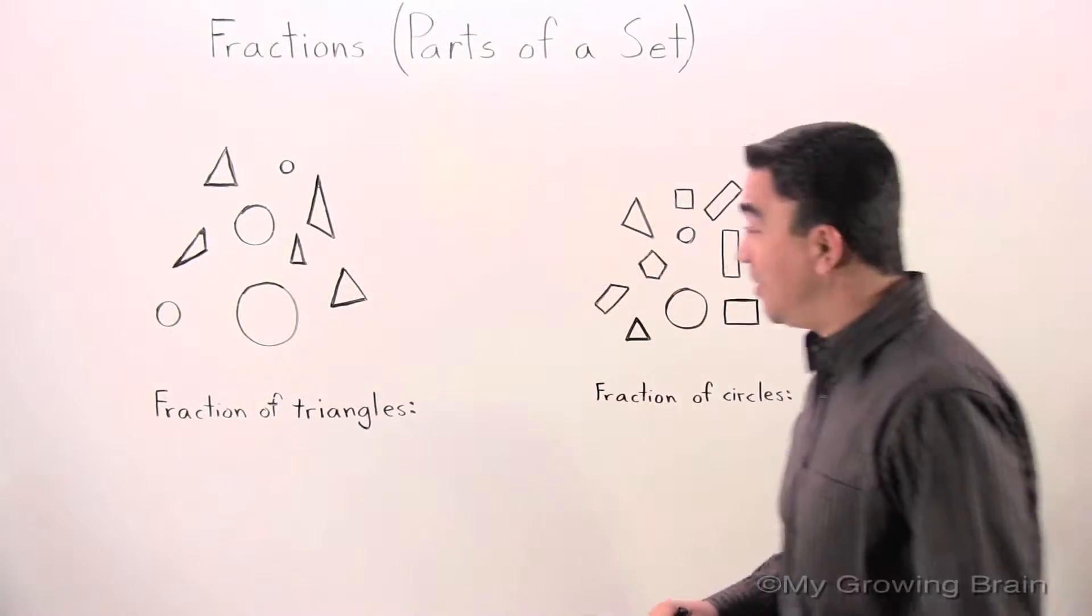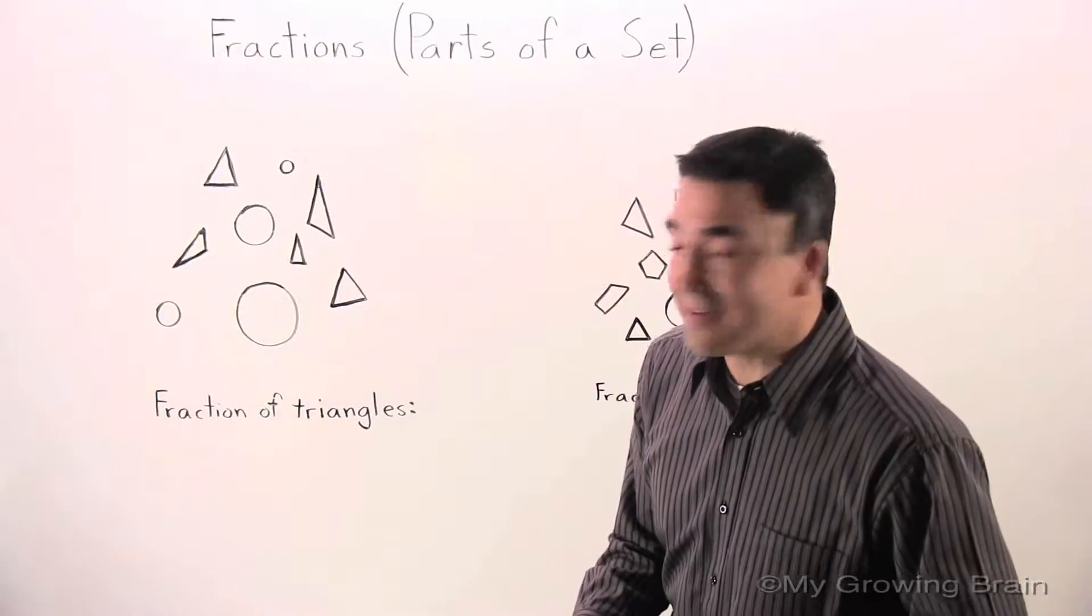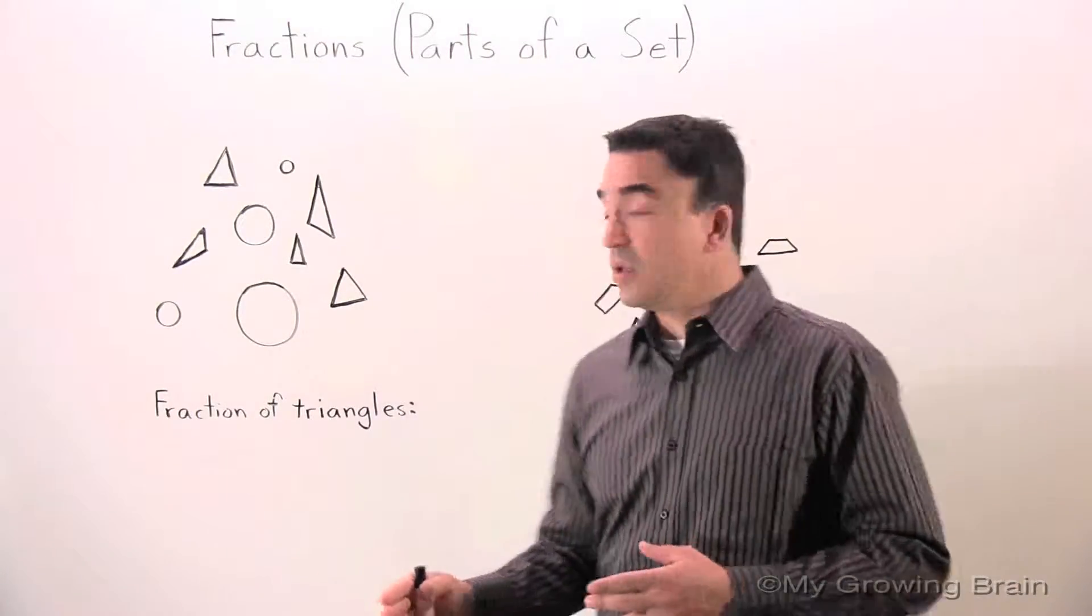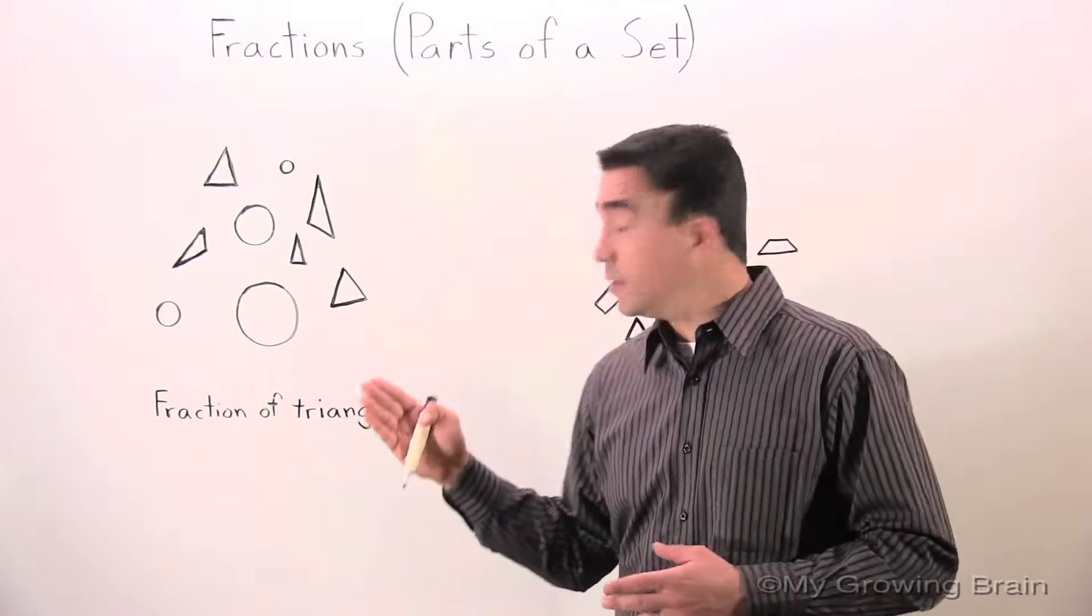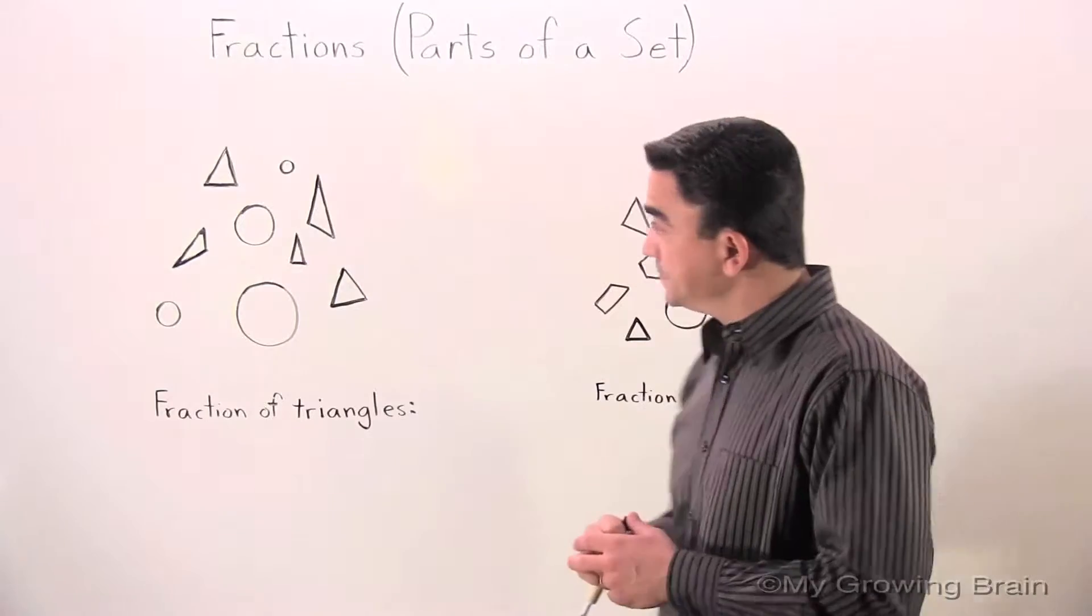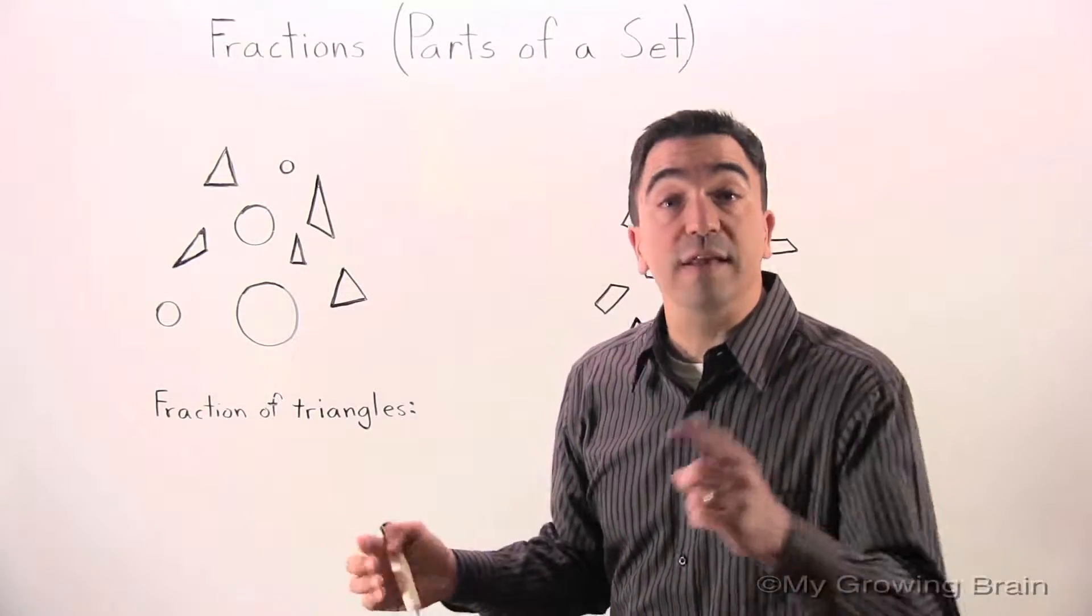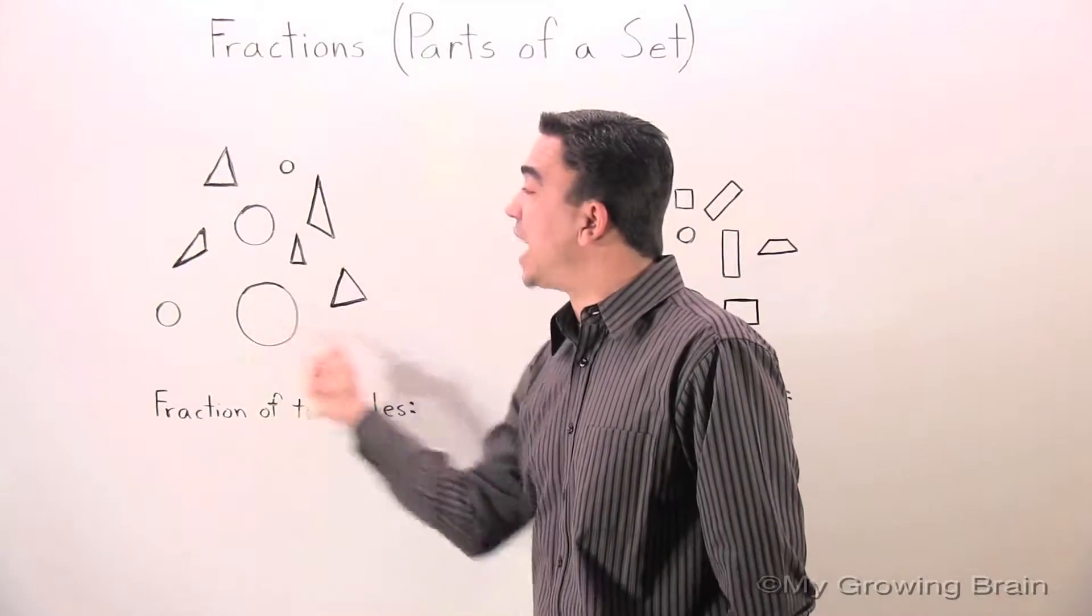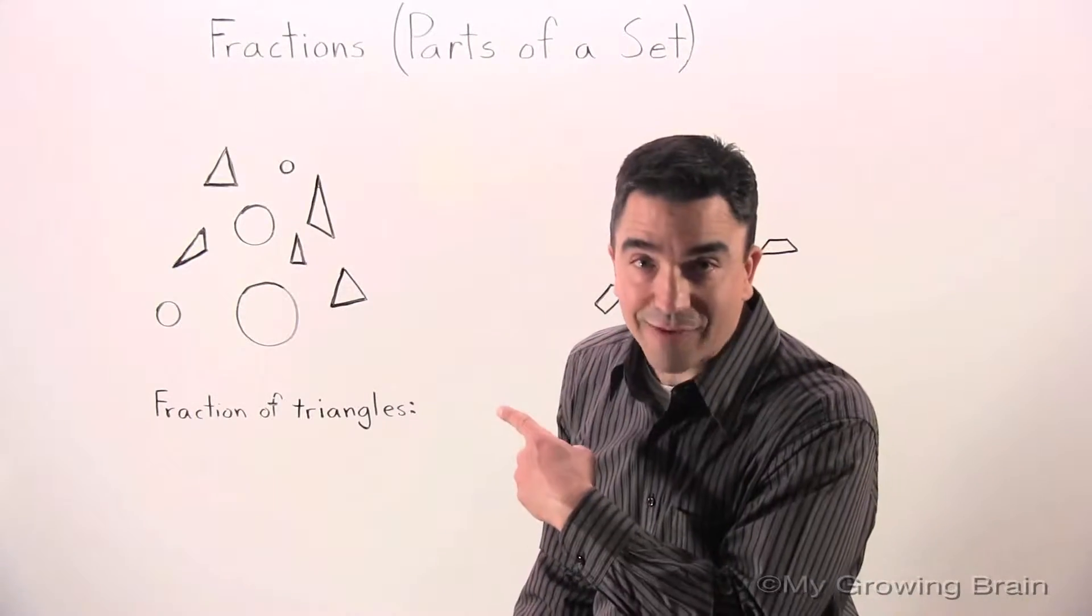Here's our set. A big set it is. Well, what we need to do here is find the fraction that represents the total number of triangles in this set. Well, I'm going to start with finding the denominator. The denominator is the total number of shapes in that set.